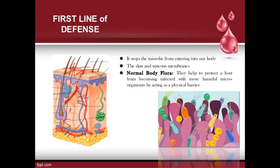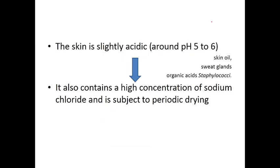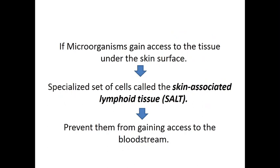This flora produces certain organic acids. Staphylococcus is a normal flora of the skin, and it does not allow other microorganisms to survive on the surface. The pH of the skin is around 5 to 6, so bacteria are not able to grow at this pH. However, fungi can grow, which is why we sometimes get fungal infections.